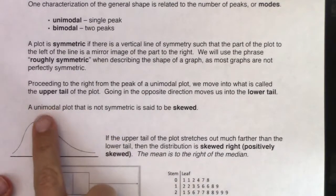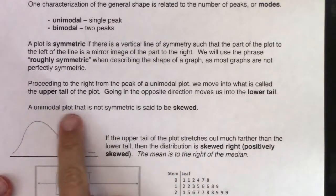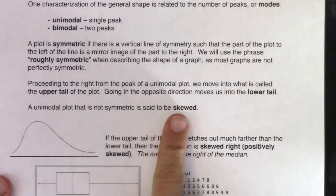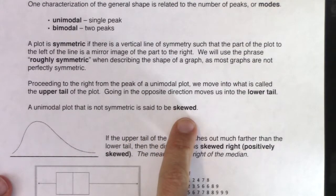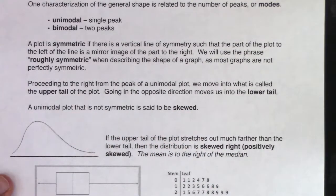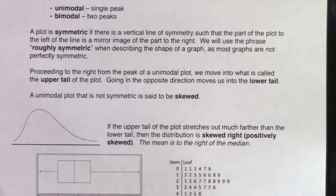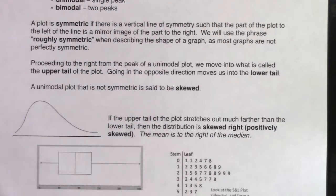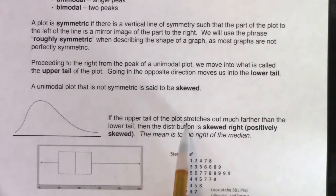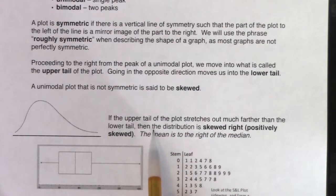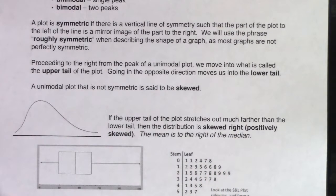If you have a unimodal plot that is not symmetric, we will say it's skewed. There are two directions your graph can skew — it can skew right and it can skew left. If the upper tail of the plot stretches out much farther than the lower tail, then the distribution is skewed right, or sometimes we use the phrase positively skewed.